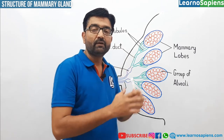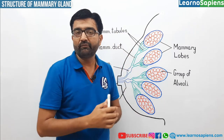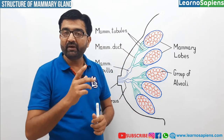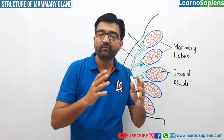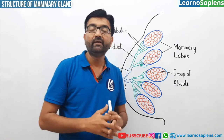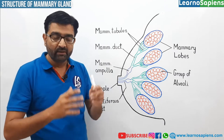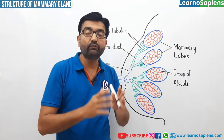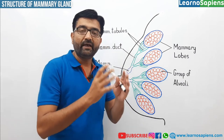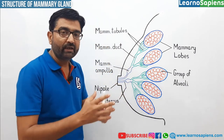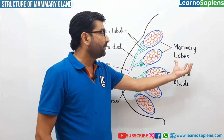So to start with, the memory gland comprises two types of tissues. One is alveolar tissue — alveolar tissue matlab fatty tissues, fat se bana hota hai. And the second type of tissues are known as glandular tissues. Now these glandular tissues are more important. Glandular tissues are divided into 15 to 20 memory lobes.